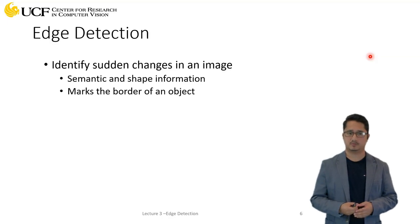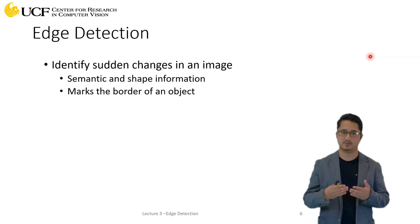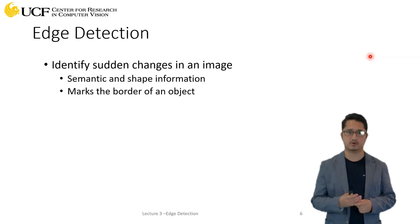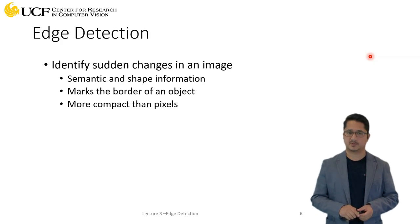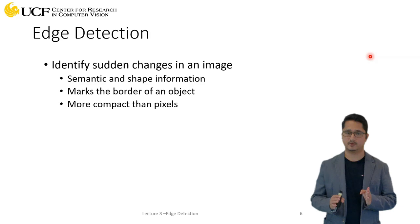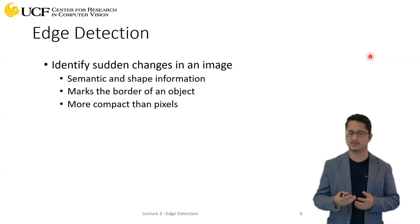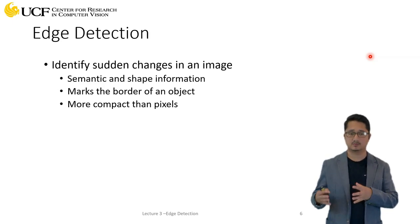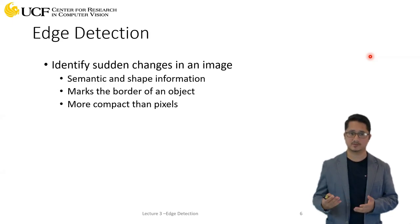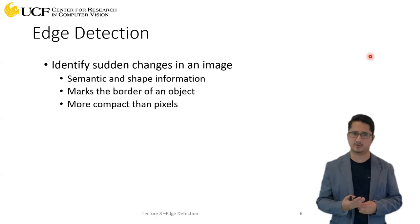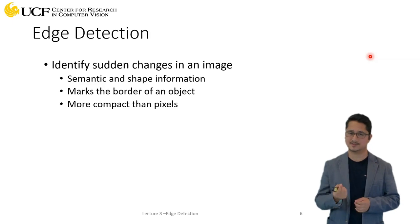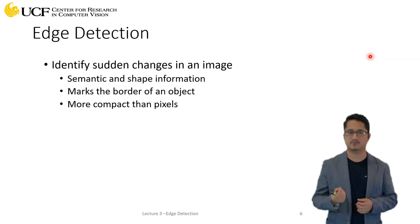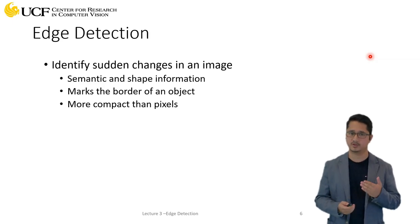Edge detection gives you semantic or shape information. For example, performing edge detection on an image gives you the boundary of an object. Also, instead of storing all RGB pixel values — which requires a lot of memory — you can just store where edges are present, which is much less expensive while still preserving shape information.